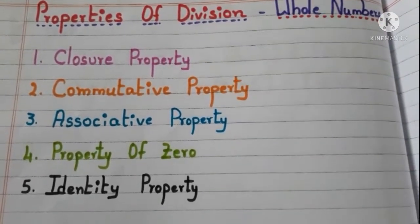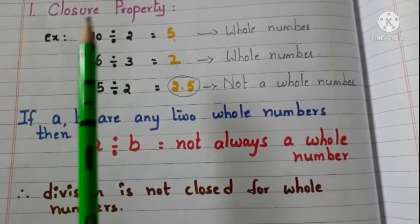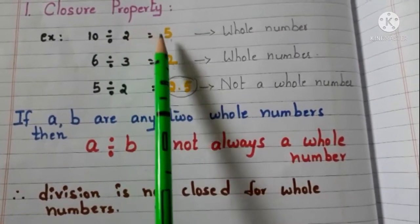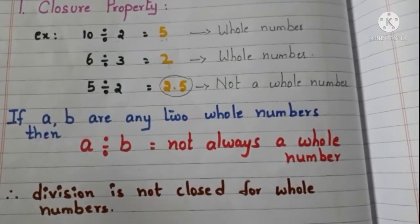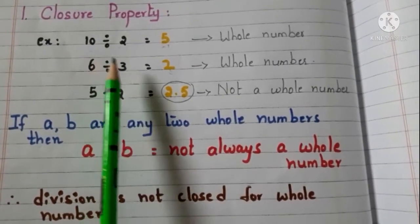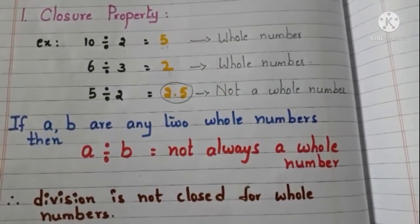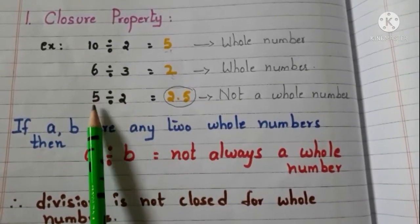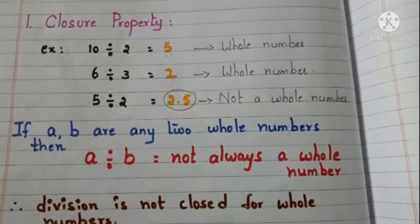First we start with closure property. Let us see with examples. Take 2 whole numbers 10 and 2 — divide 10 with 2, the quotient is 5, and 5 is a whole number. Now take 6 and 3 — divide 6 with 3, the quotient is 2, a whole number. Now take 5 and 2 — divide 5 with 2, the quotient is 2.5, and it is not a whole number.